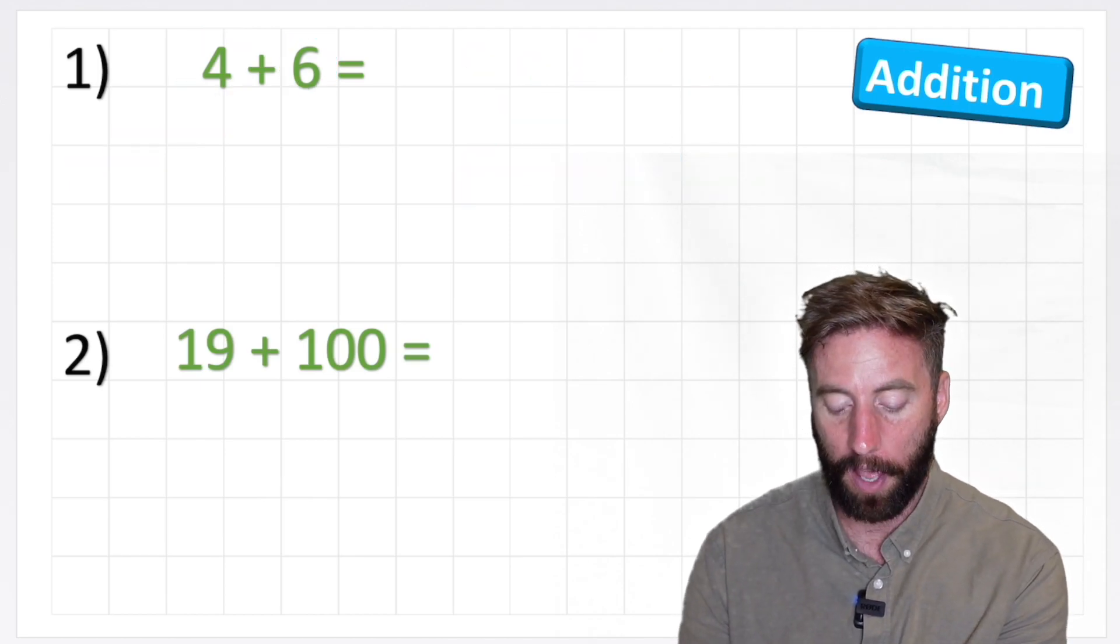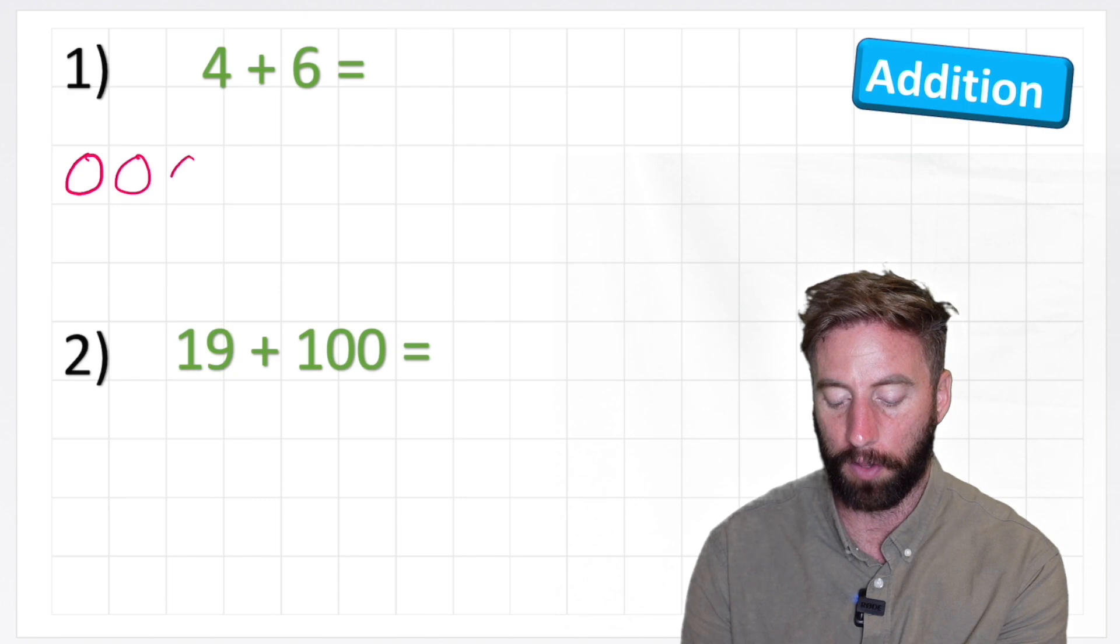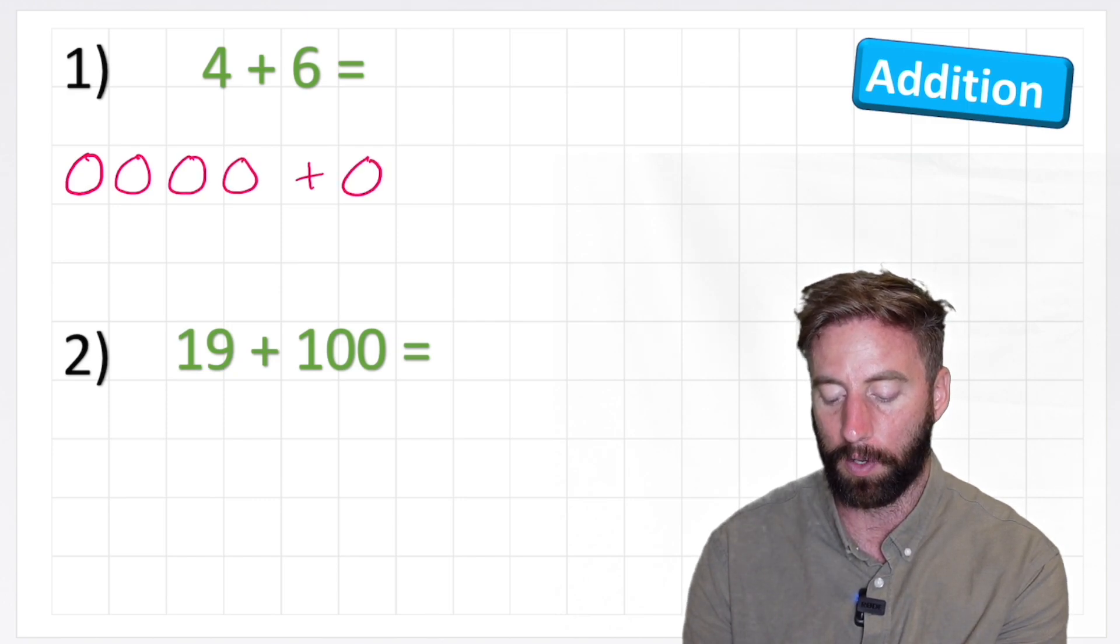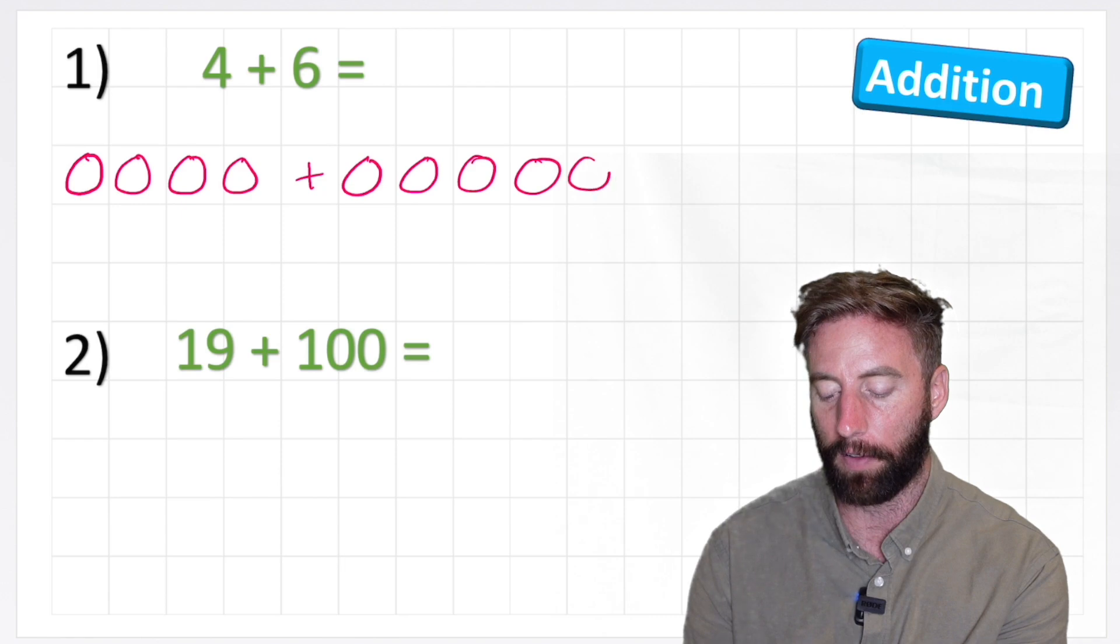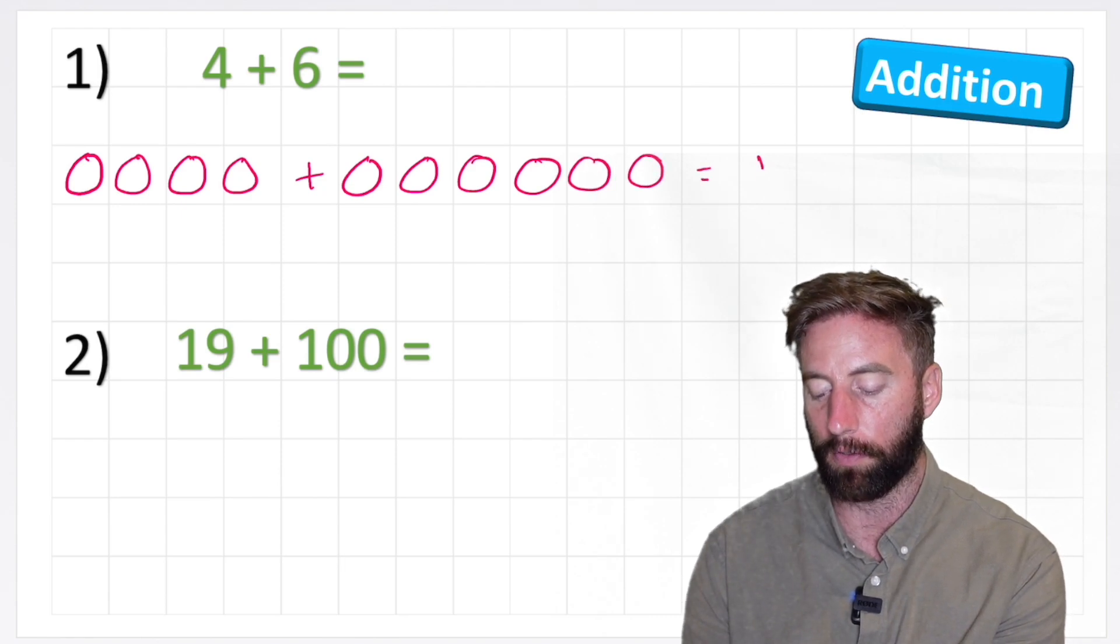Let's look at it another way. If I have four balls, one, two, three, four, and I add six, one, two, three, four, five, six, it gives me a total of 10.